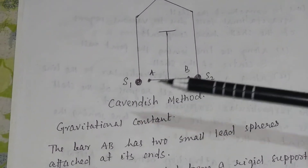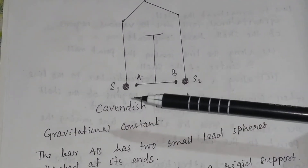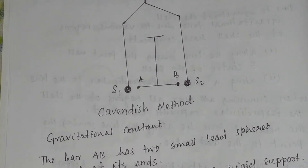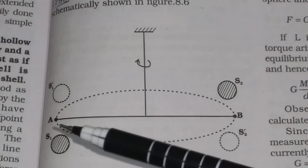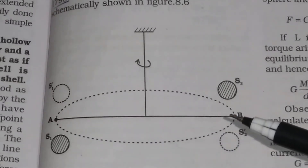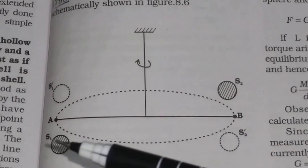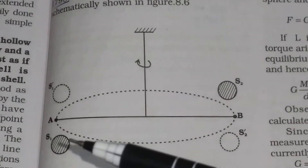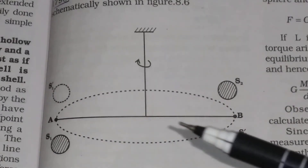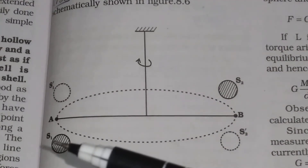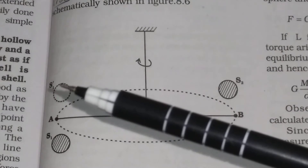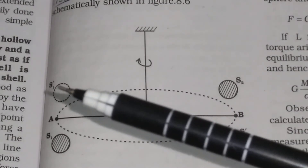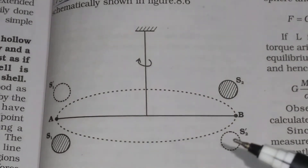If S2 goes to one side, then S1 will go to the other side, and vice versa. In this picture, if small mass A and small mass B are here, bigger sphere S2 and bigger sphere S1 are arranged in one alignment. When they rotate, the alignment changes: S1 moves to the other side and S2 moves to the other side. This new position of S1 is written as S1-dash and this new position of S2 is written as S2-dash.